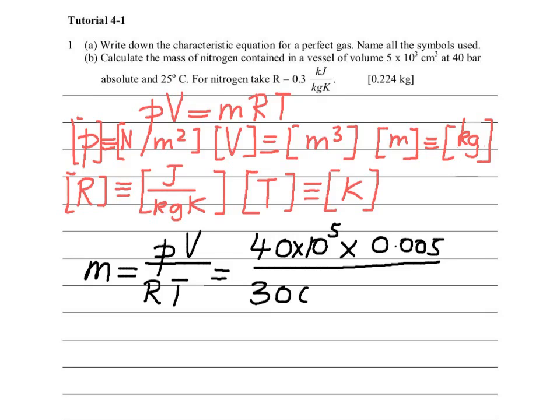Notice, I cannot use 0.3. I have to use joules, which is 300. A very common mistake when you do calculations regarding mass, multiplied by the temperature in Kelvin, which is 298.